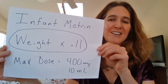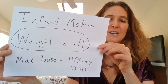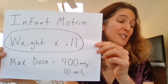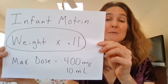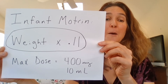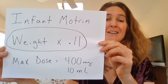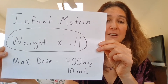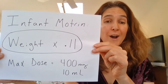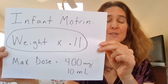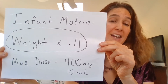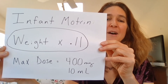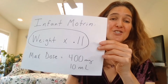Next is infant Motrin. Infant Motrin is twice as concentrated as children's Motrin. Children's Motrin is 100 milligrams per 5 mLs, while infant Motrin is 100 milligrams per 2.5 mLs. Because of this, we multiply by a number that is half of the other calculation. With infant Motrin, take your child's weight and multiply times 0.11 instead of 0.22, and that gives you the dose in milliliters. The maximum dose is still 400 milligrams, which comes out to 10 mLs with infant Motrin because it is twice as concentrated.